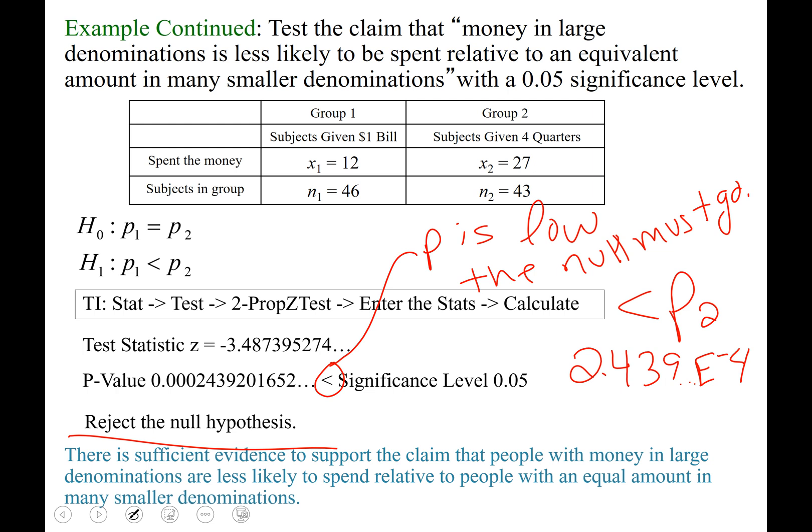This supports what we concluded based on the confidence interval as well. As long as we have the same significance level, confidence intervals and hypothesis tests should have conclusions that support one another, not be opposite.